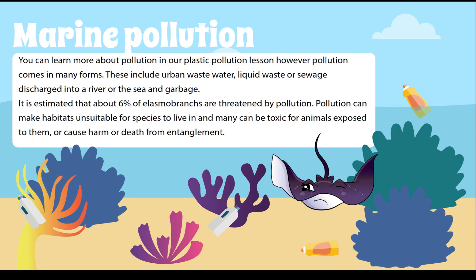Marine pollution is another major threat — not just plastic pollution but also urban wastewater, liquid waste, and sewage discharged into rivers. It is estimated that about 6% of elasmobranchs are threatened by pollution. Pollution can make habitats unsuitable and expose animals to toxic chemicals, leading to injury or death. Upper-level predators like sharks also bioaccumulate toxic chemicals in their flesh — for example, mercury builds up in shark flesh, which is why it's not a great idea to eat too much shark meat.